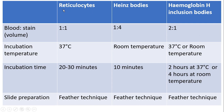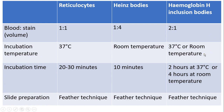For the reticulocyte staining procedure, we incubate the tube at 37 degrees Celsius for 20 to 30 minutes. For Heinz body preparation, the stain and blood mixed tube should be incubated at room temperature for 10 minutes. In hemoglobin H inclusion body preparation, there are 2 ways: we can incubate the tube at 37 degrees Celsius for 2 hours, or at room temperature for 4 hours.